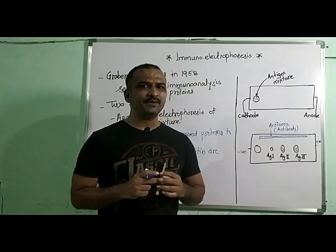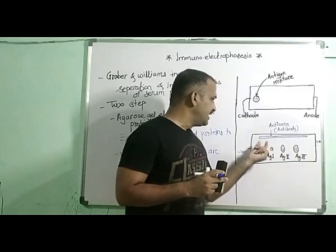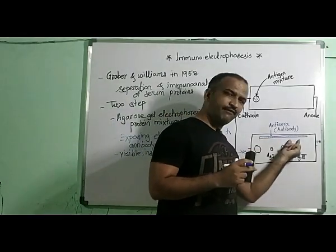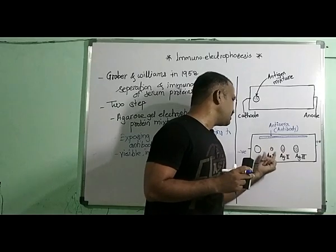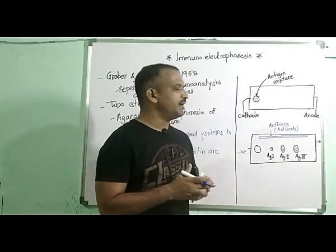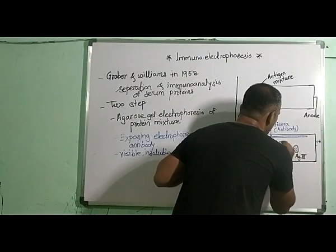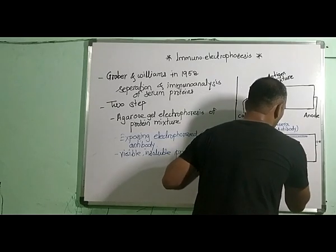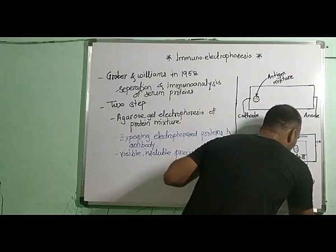In the second step, the antisera containing specific antibodies is added into the trough. If the antigens and antibodies are complementary to each other, it will result in the formation of the visible, insoluble arc that is called the precipitation arc or precipitating arc.